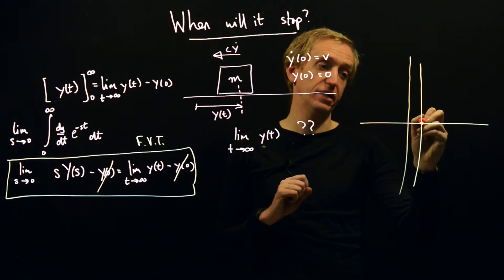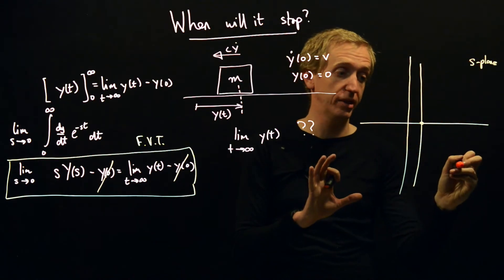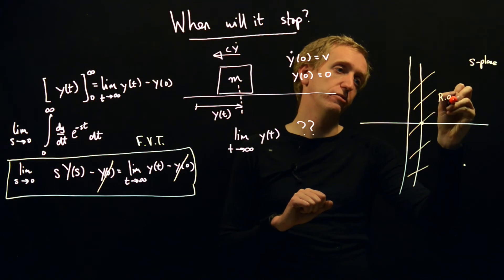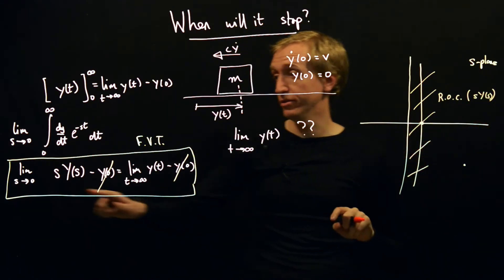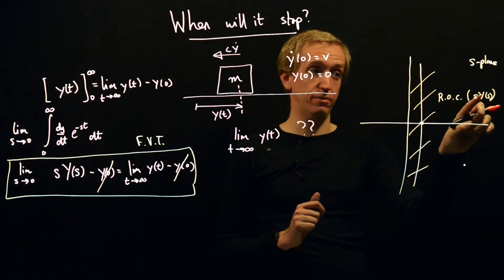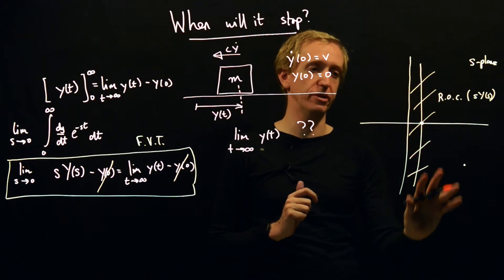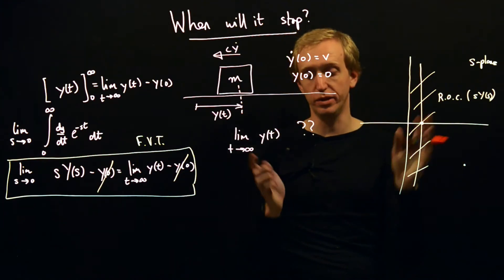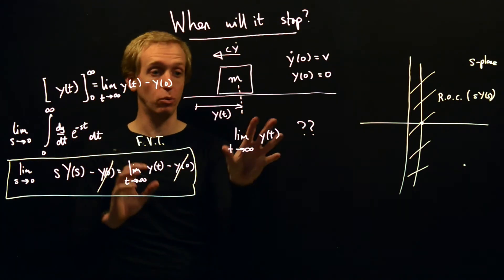So here we've got the s plane. So this is just a picture of the complex plane corresponding to different values of s and we need the region of convergence. We need the region of convergence of s*y(s) to include the origin. So the point we're taking our limit to has to be included in the region of convergence of s*y(s). What does that mean? It means that s*y(s) cannot have any poles in the region like this. So s times y(s) needs to be stable, have all of its poles in the left half plane. It's what this means in practice. And so subject to this condition, we have the final value theorem and that's what we're going to use to solve our problem here.